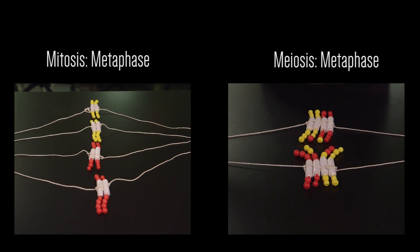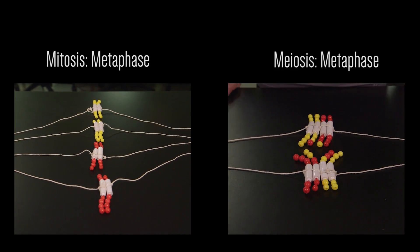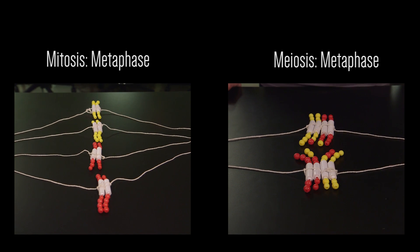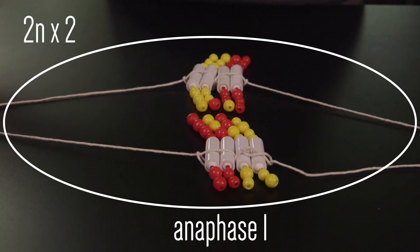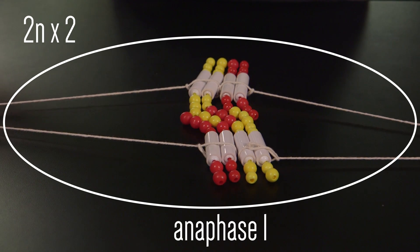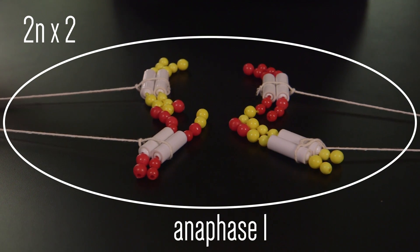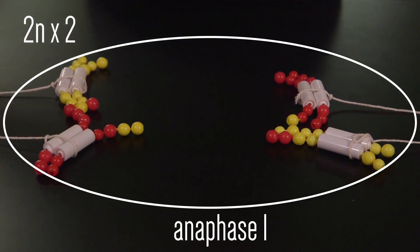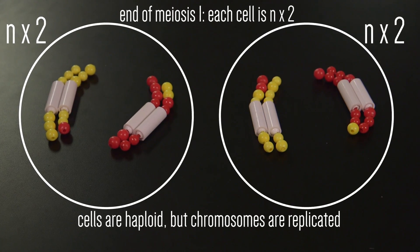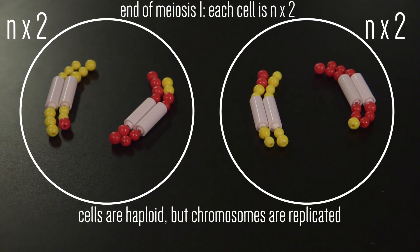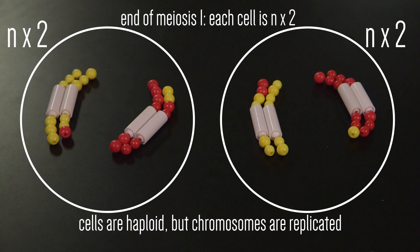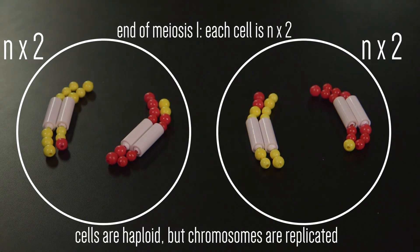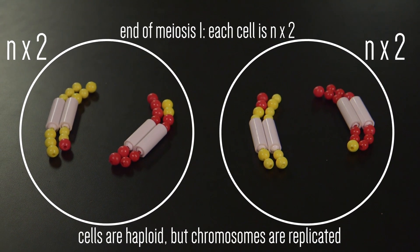This metaphase, called metaphase 1, looks very different from what we saw in mitosis. The homologs are separated by the spindle fibers, but the chromatids are still intact. At the end of the first division, the cells are haploid, because homologs are now in separate cells. They are no longer in pairs.